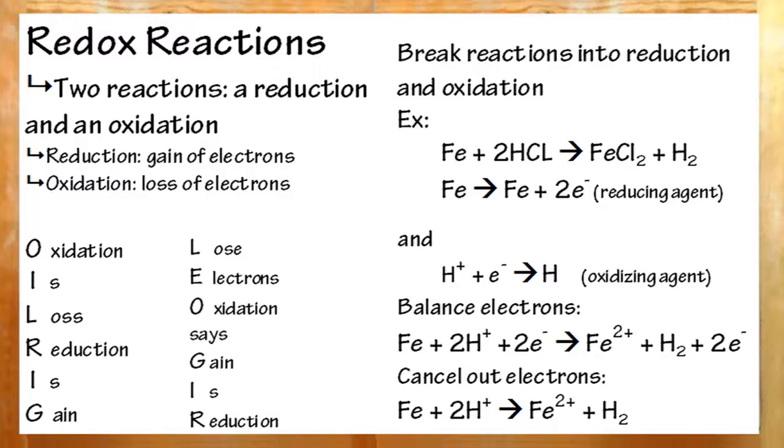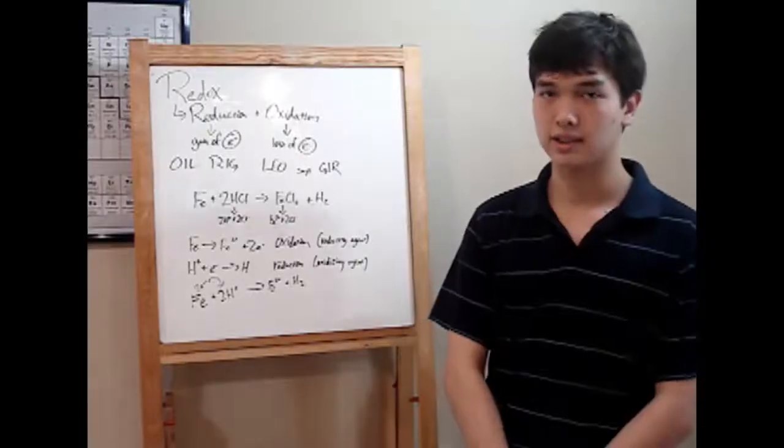Figure out which one lost electrons. That's where oxidation occurred, and the compound itself is the reducing agent. And which one gained electrons? That was reduction. And the compound that lost them, that's the oxidizing agent. So, just remember, make sure you know where all your electrons are coming from and where they're going. That's all for now.